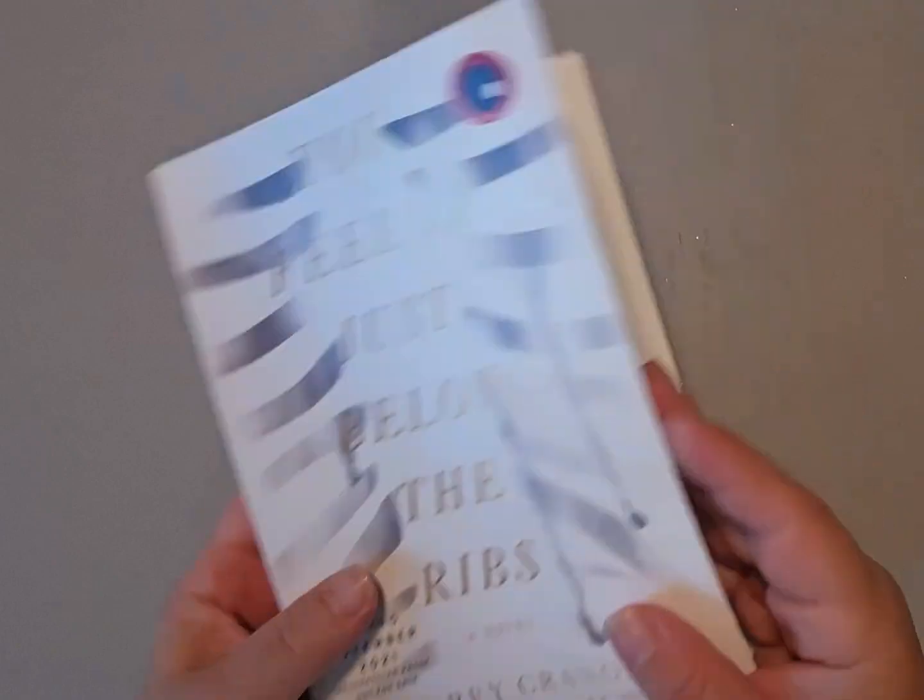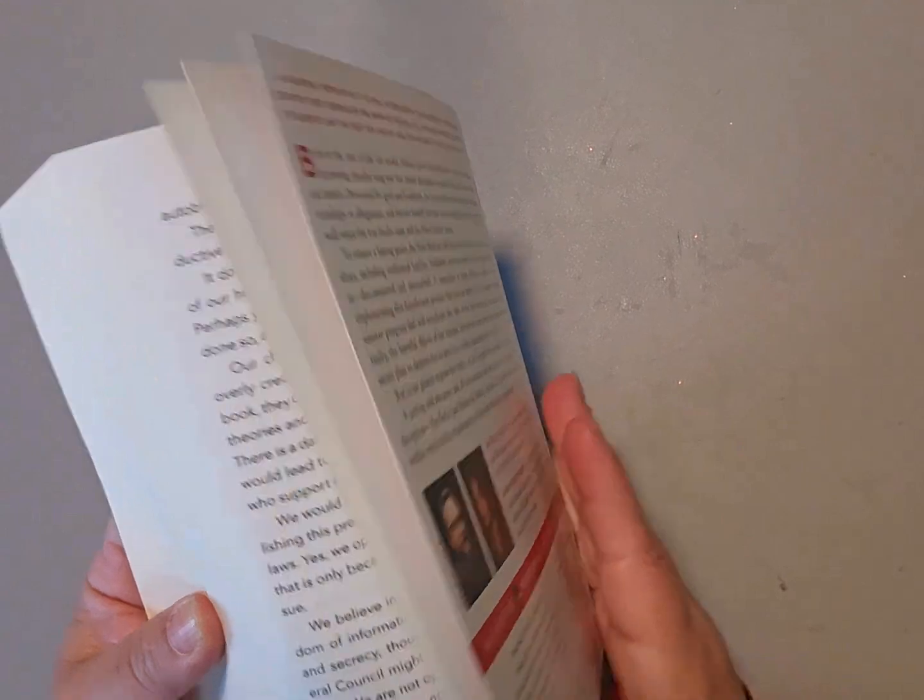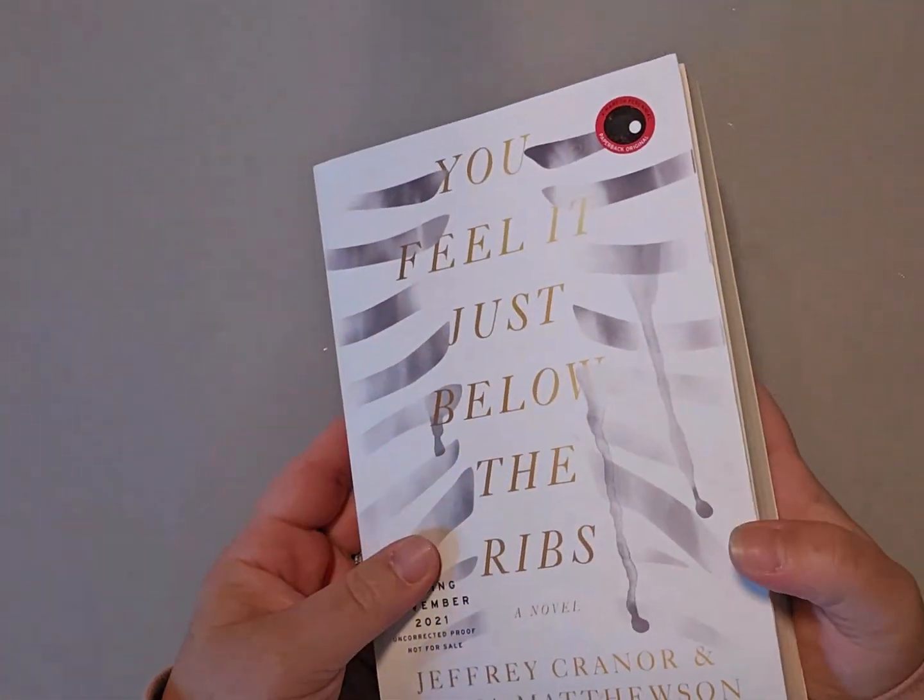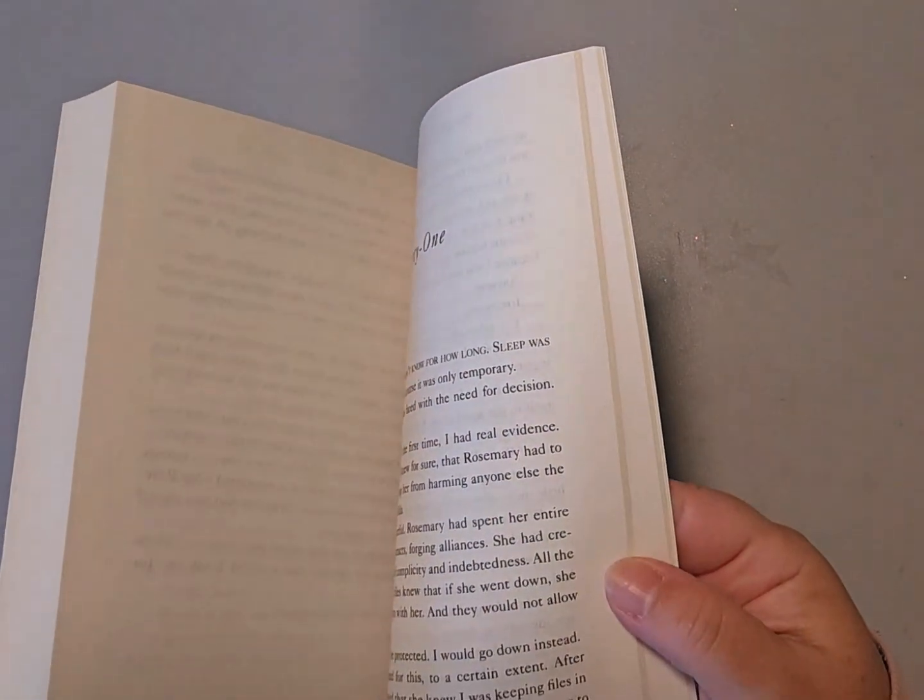To make this beautiful protea, you're going to need a softcover book. This book has 373 pages, so anything around 350 would be perfect because you're going to need some extra pages at the end to make the leaves.